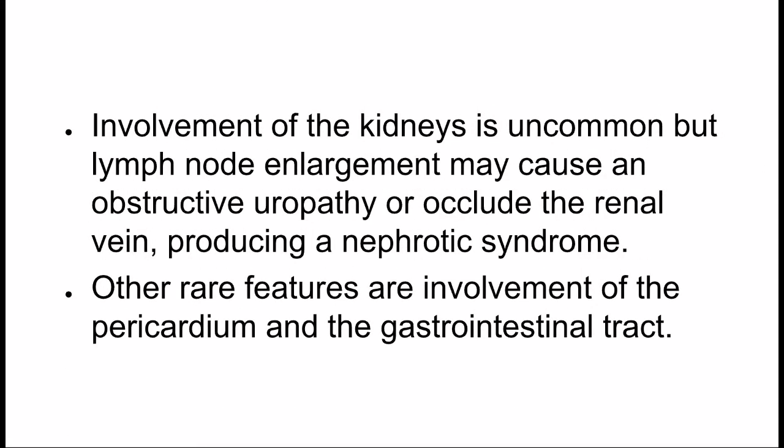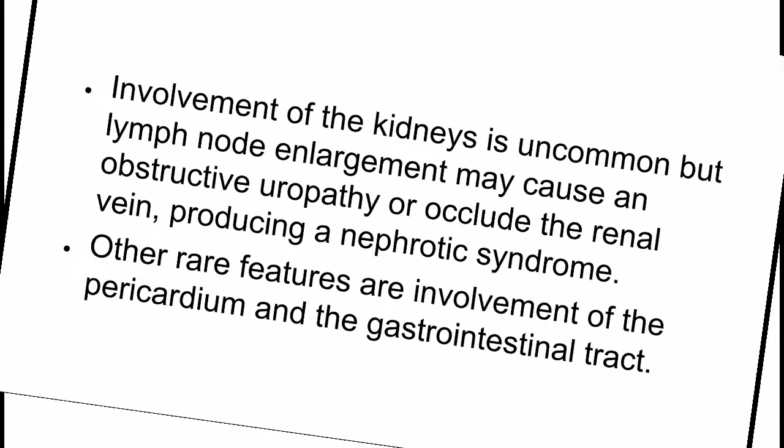Involvement of the kidneys is uncommon, but lymph node enlargement may cause an obstructive uropathy or occlude the renal vein, producing a nephrotic syndrome. Other rare features are involvement of the pericardium and the gastrointestinal tract.